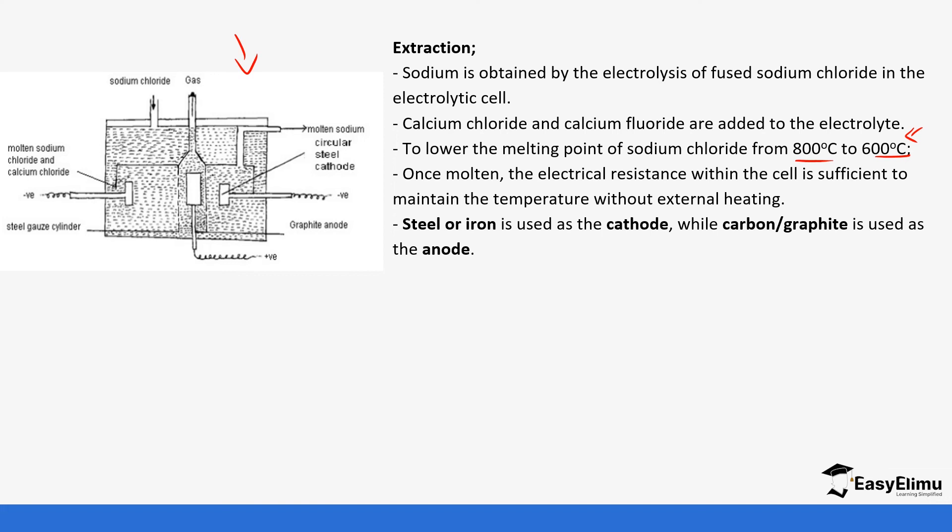Steel or iron is used as the cathode, as you can see from the setup. We have the steel cathode and then graphite is used as the anode. You can see the anode at the center and the steel cathode. Steel is not used as the anode.